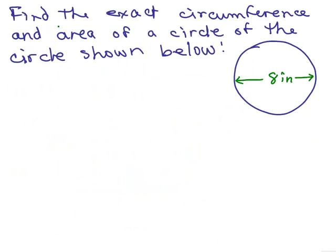Next problem. Find the exact circumference and area of the circle shown below. So we're going to use the formula, but notice I've given you the diameter going all the way across. So the diameter of this circle is 8 inches, but then what would be the radius? The radius is half of that, so it's 4 inches.